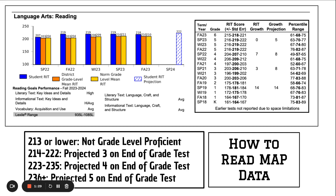I'm looking at a black and white printout of the MAP score, which is what is being sent home. We don't send home in color, but you can see it in color on the screen. Yours shows your student's RIT, which on the video is in blue, but on the printed handout it will be in black. You can see how your child compares to other students in our district and the norm grade level for all kids that take this test that are their age.